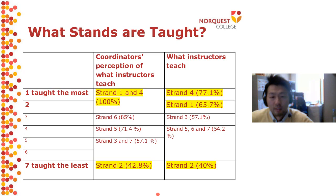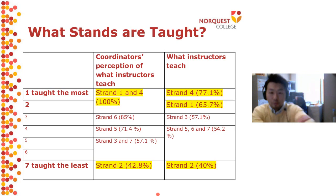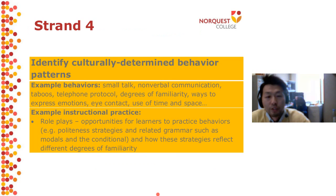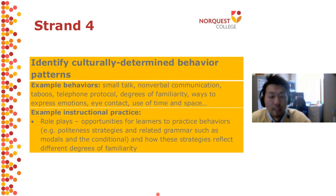What do Strands Four and One look like? Strand Number Four is 'identify culturally determined behavior patterns.' Some examples are small talk, nonverbal communication, taboos, telephone etiquette, ways to express emotions, eye contact, and body language, as well as use of time and space. An example instructional practice is role plays.